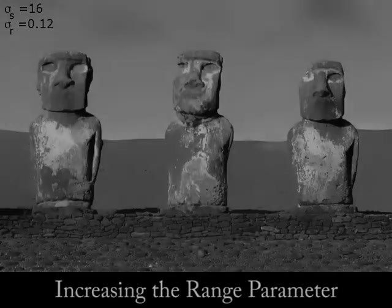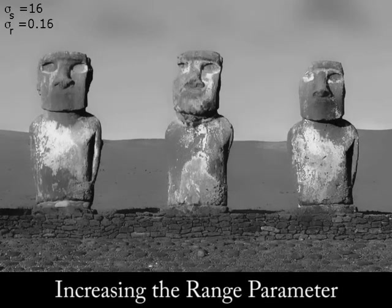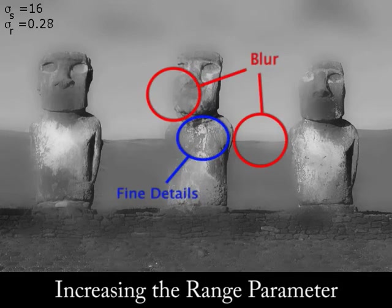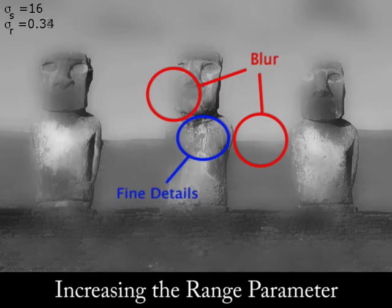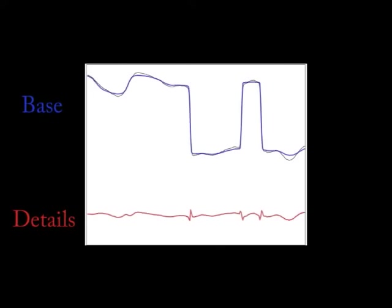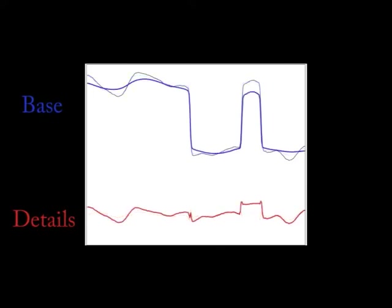To achieve a more aggressive smoothing, it is necessary to increase the range parameter σr as well, but this ultimately causes even some of the stronger edges to become blurry, and yet some small-scale details still remain unfiltered. In the limit, increasing σr makes the bilateral filter behave like a linear filter. To summarize, in order to produce progressively coarser images, the bilateral filter tends to blur some of the edges that it is supposed to preserve.